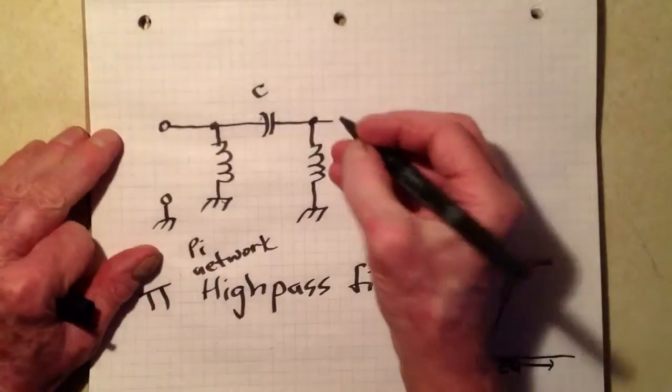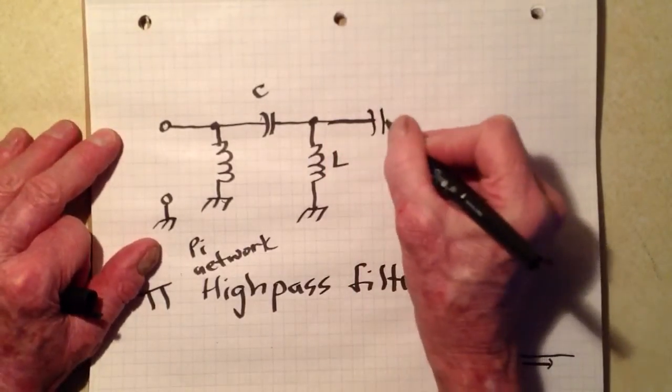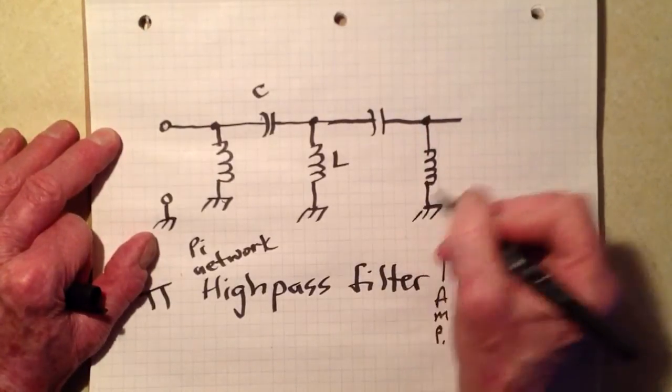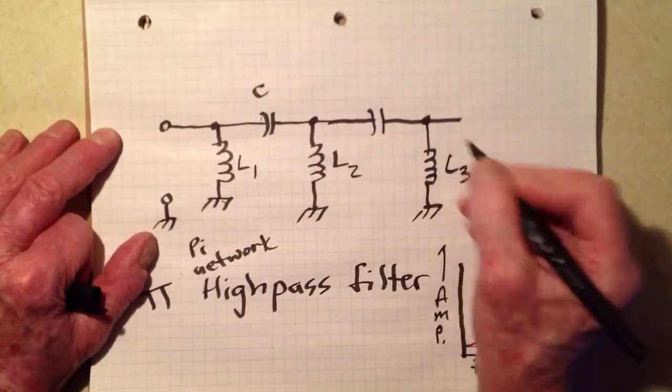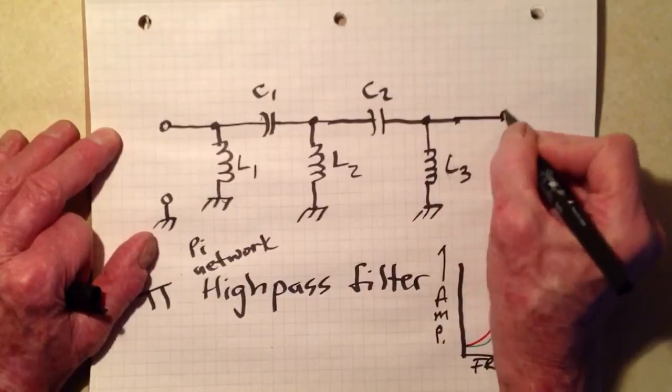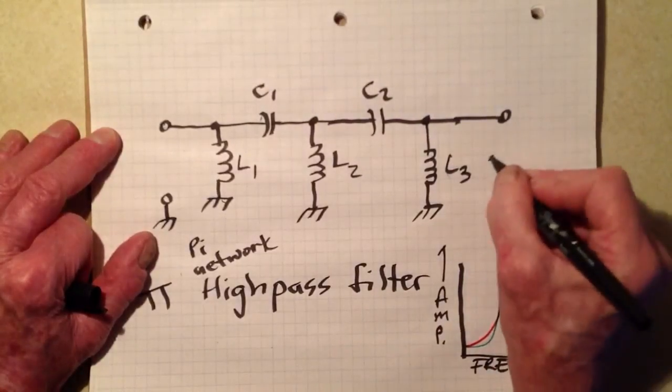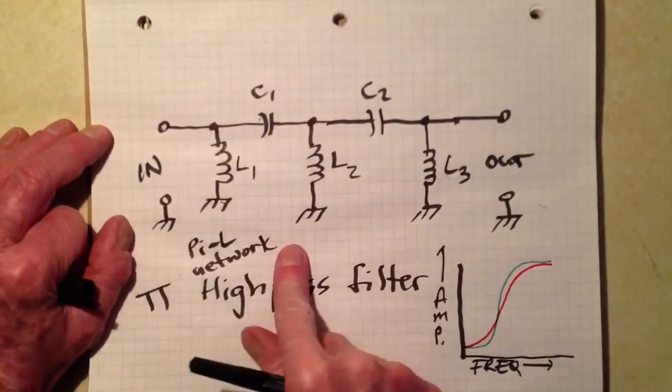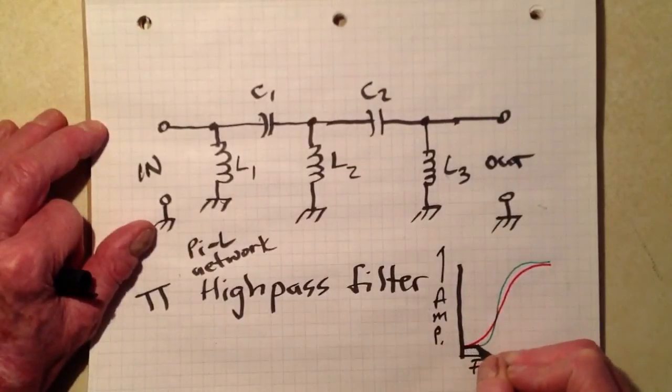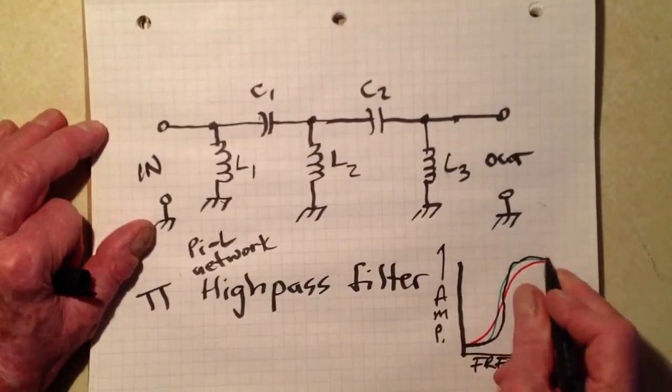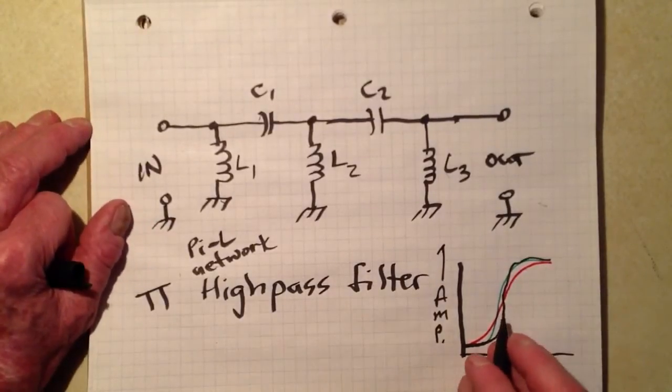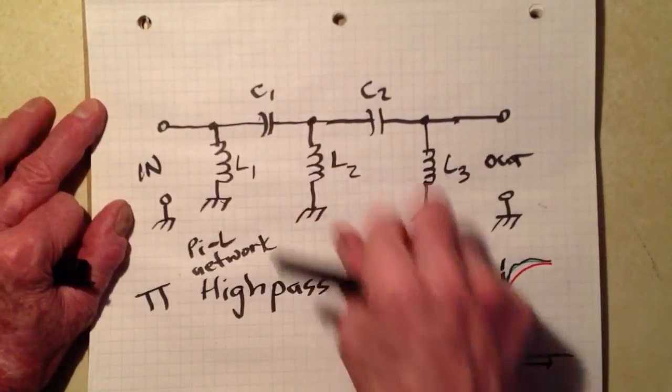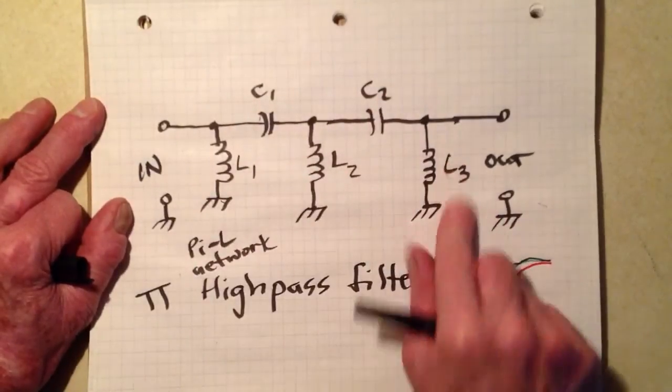Finally, as we did before, we can add another series component and another parallel component. L1, L2, L3, C1, C2, input, output. This is a pi L network, because it's like a pi with an L tacked onto it. We'd get an even sharper response. The cutoff frequency depends upon the values of these components. The capacitors have identical value, the inductors have identical value.